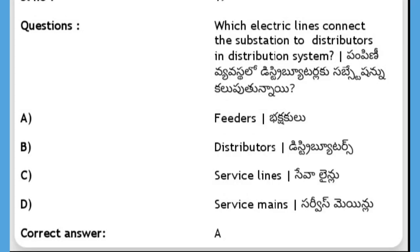Which electric lines connect the substation to distributors in a distribution system? Options: feeders, distributors, service lines, service mains. The answer is feeders. The electric lines from the substation to distributors are called feeders.